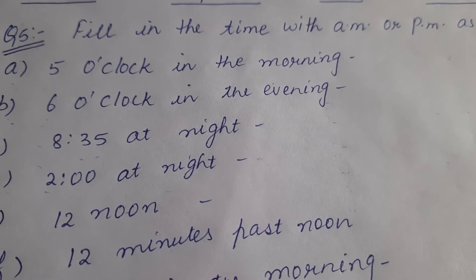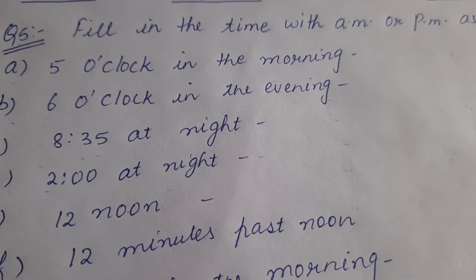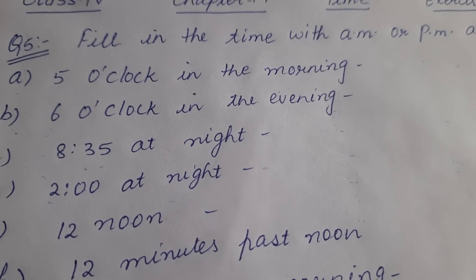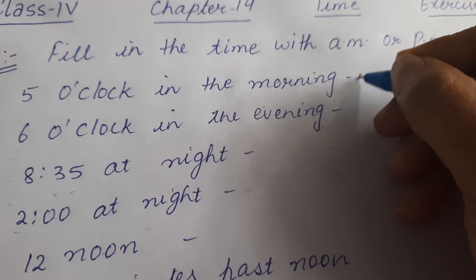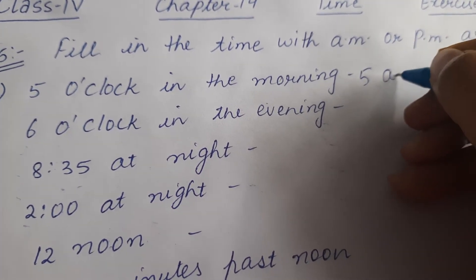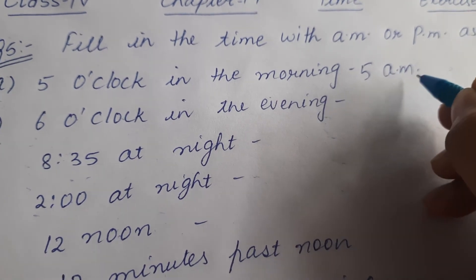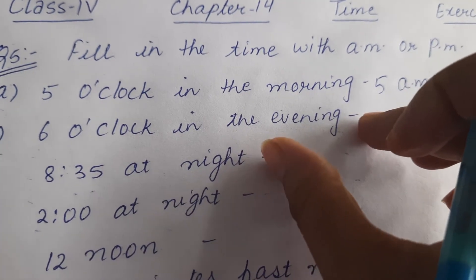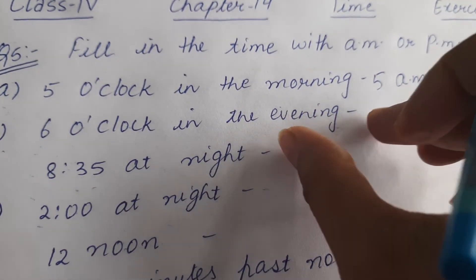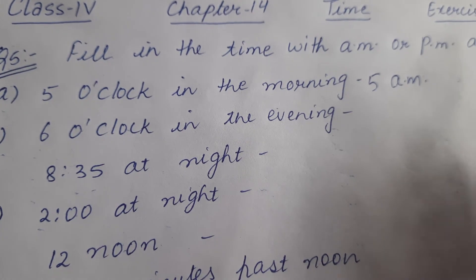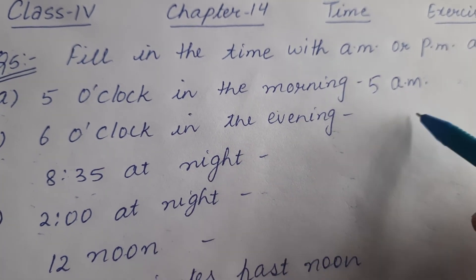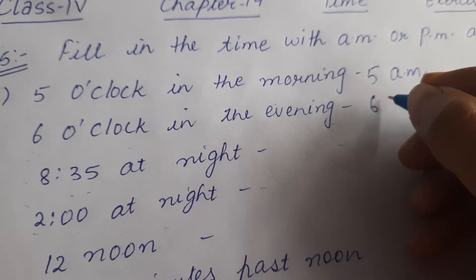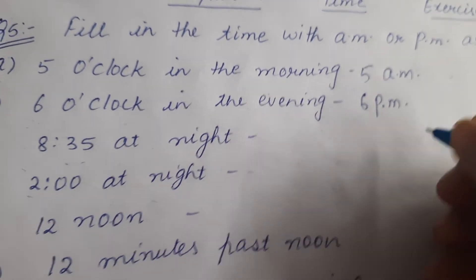Let's start question number 5. Part a: 5 o'clock in the morning — morning means this belongs to the first period, so we write 5 a.m. Part b: 6 o'clock in the evening — evening means this belongs to the second period, from 12 noon to 12 midnight — so we write 6 p.m.